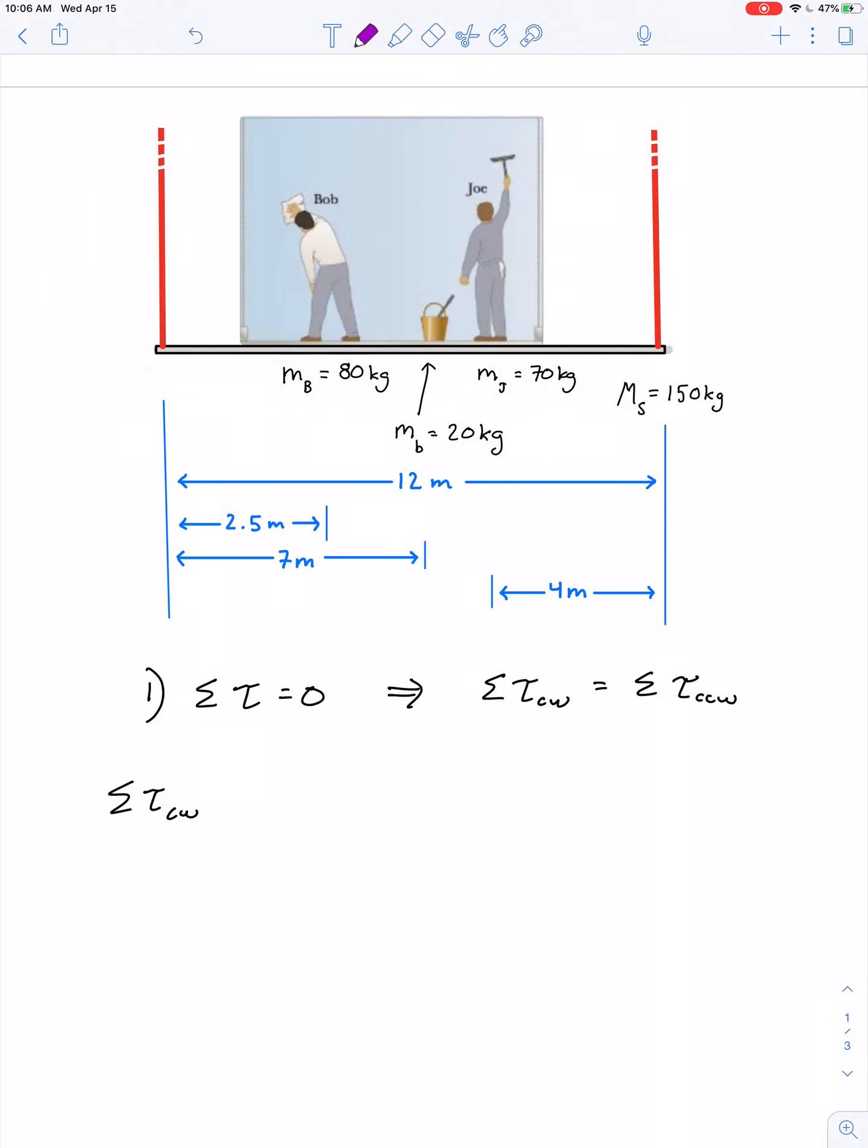We could consider the left end, the center of mass, or the right end as the axis of rotation. If this scaffold is in equilibrium, then it's not rotating about any of those axes, so we're free to pick any axis we want.